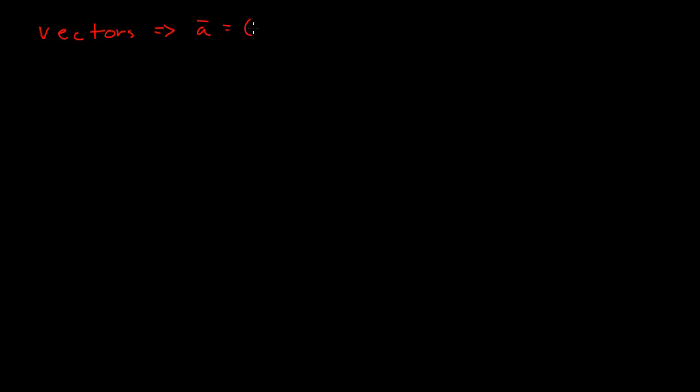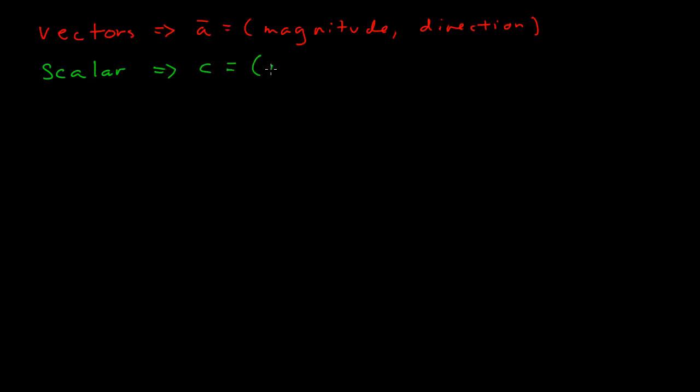For this module we are going to take a look at vectors again, and this time look at multiplication by a scalar and subtraction. In the last module we were looking at vectors. Their characteristic was that they had a magnitude and direction. That was in contrast to a scalar, which could be represented by just a magnitude.